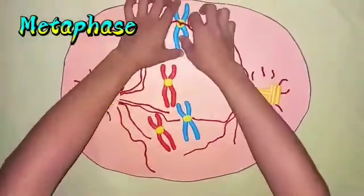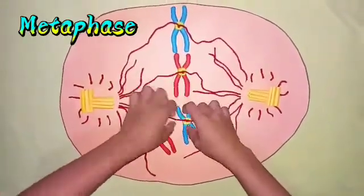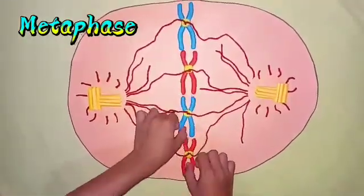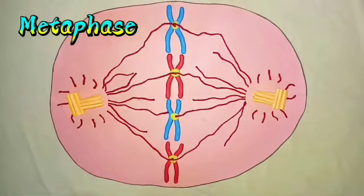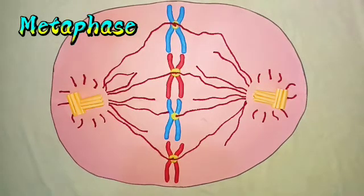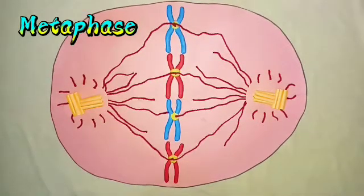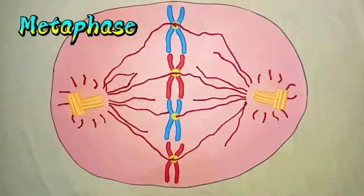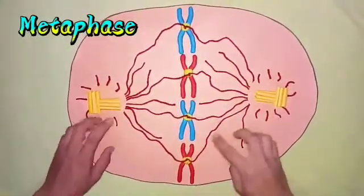By the end of prophase, the spindle fibers align the chromosomes along the middle of the cell nucleus by their centromere. This line is referred to as the metaphase plate. During this stage, the sister chromatids appear to repel each other, forming the familiar X shape of a chromosome. This organization helps to ensure that in the next phase, when the chromosomes are separated, each new nucleus will receive one copy of each chromosome. This is the metaphase plate, then it will now proceed to anaphase.